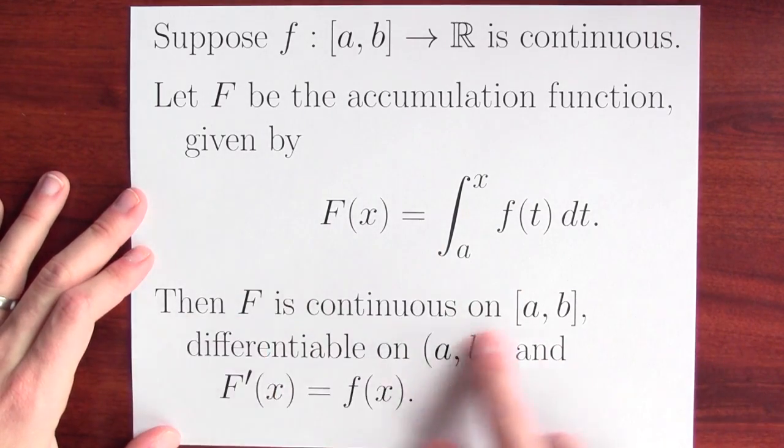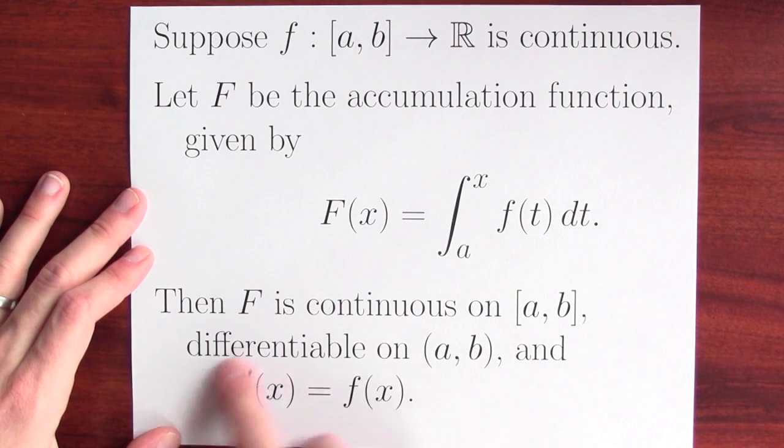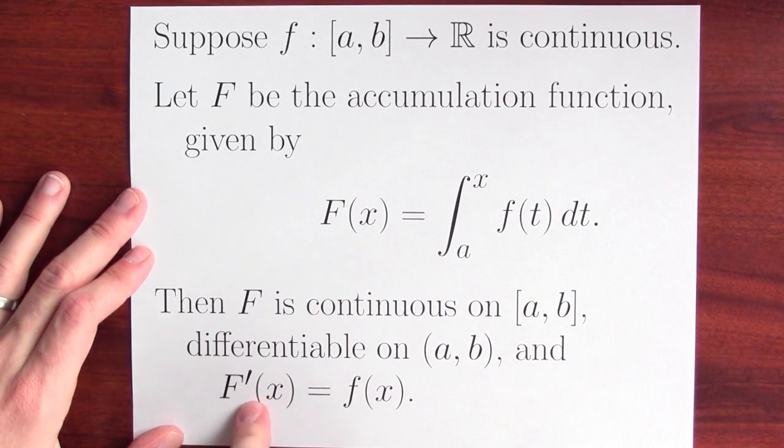And then big F is continuous in the closed interval, differentiable on the open interval, and the derivative of big F is little f. In other words, an anti-derivative for little f is big F.